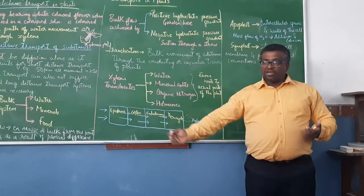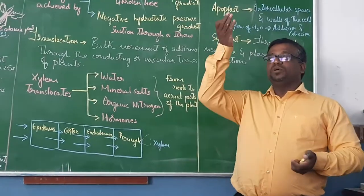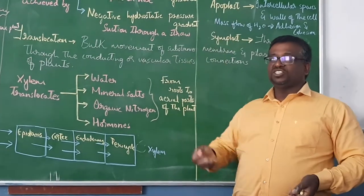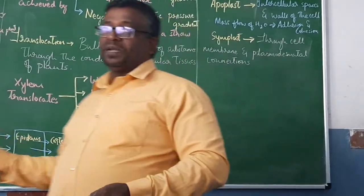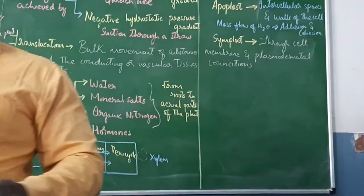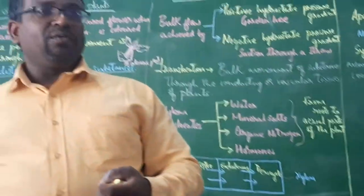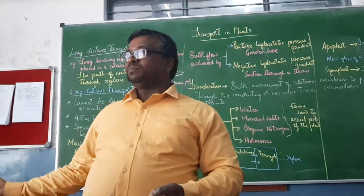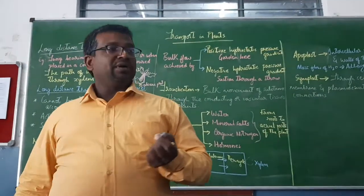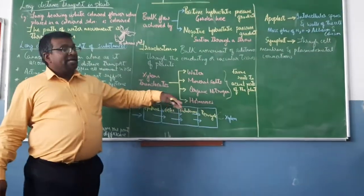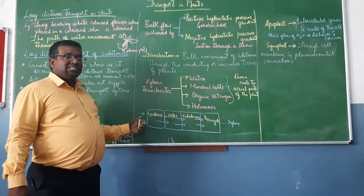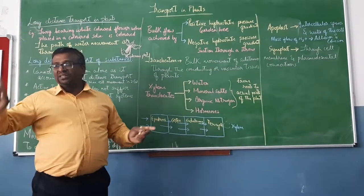Or you can call it as horizontal transport. Vertical transport is translocation against the gravitational force. This is how the water is obtained from the soil. All the soil water is not taken. The water that is taken, the plants which can absorb the water we call it as grassad. That water is reaching the xylem.